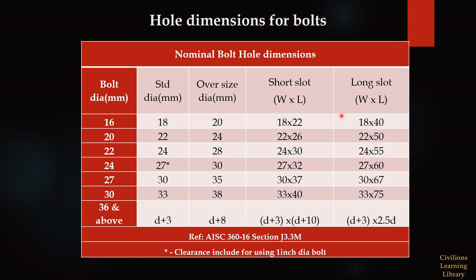Coming to long slot holes — unlike short slots, the longer direction slot is much higher. This is the maximum allowed slot value. For a 16mm diameter bolt, we can go up to 40mm length. For a 20mm diameter bolt, up to 50mm length. This table is available up to 30mm diameter bolts. For 36mm and above, the width W is D plus 3mm — for example, for 36mm bolt that is 39mm — and the length L should be 2.5 times the bolt diameter. This is the maximum value for long slot holes.